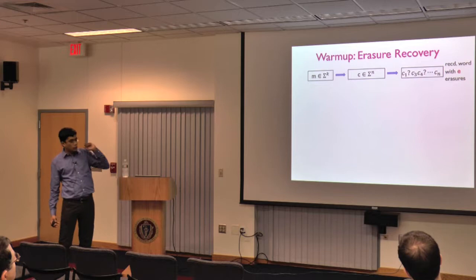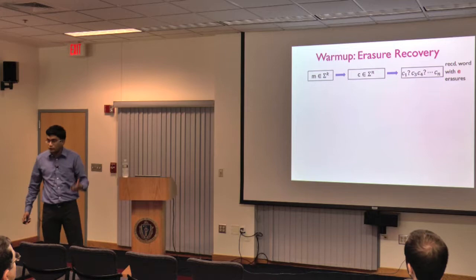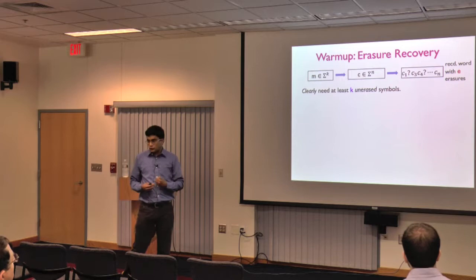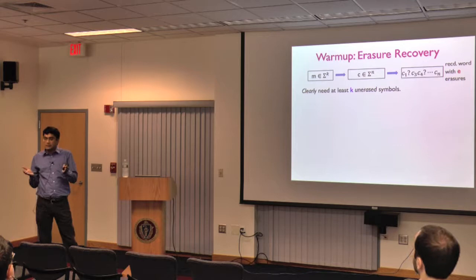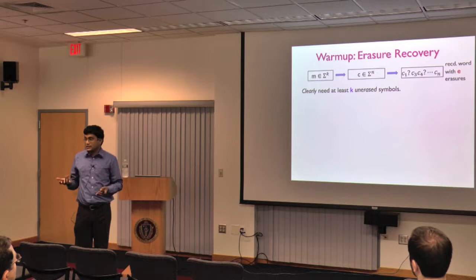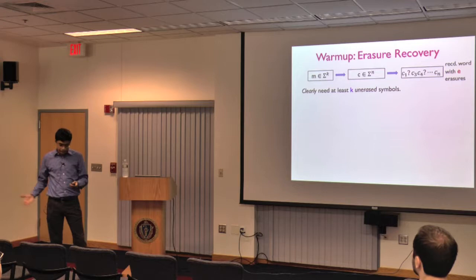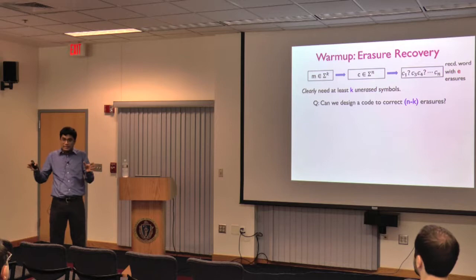In the worst-case erasure setup: you have a message, encode it into a codeword C, and the codeword goes through a channel — like packets on the internet — where some packets go missing, but you know which ones go missing. You get a string with some question marks, and E of those symbols are erased. Since you have K symbols of information, you need at least K unerased symbols. The question is: can you design a code that corrects N minus K erasures — really the best you can hope for — so that all but the minimum required amount of data can be erased and you still recover?